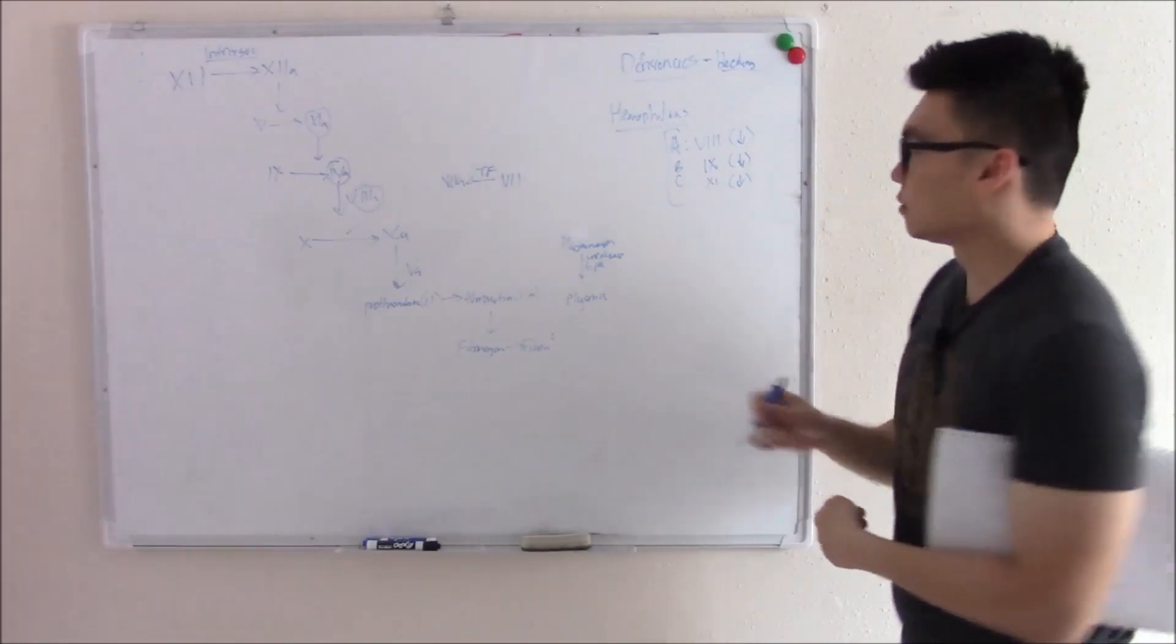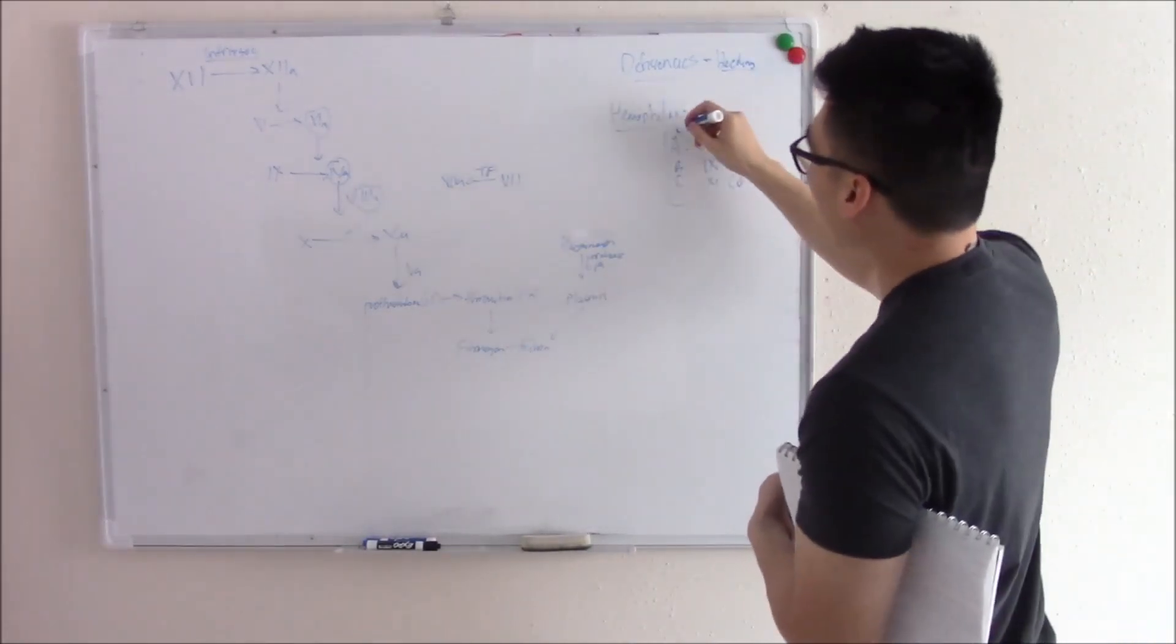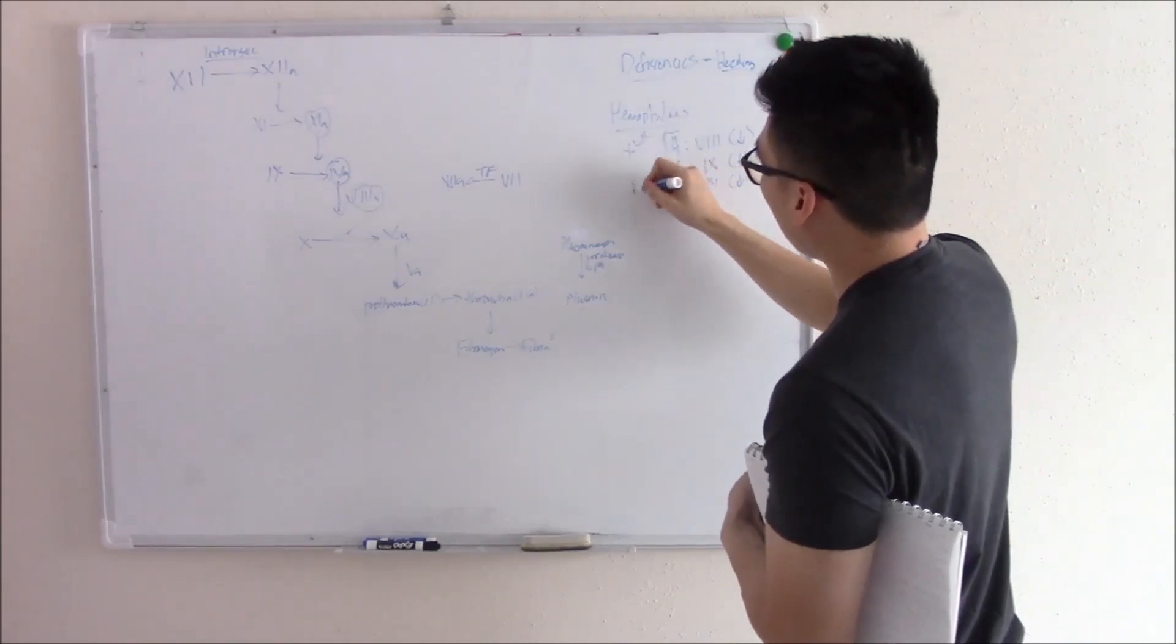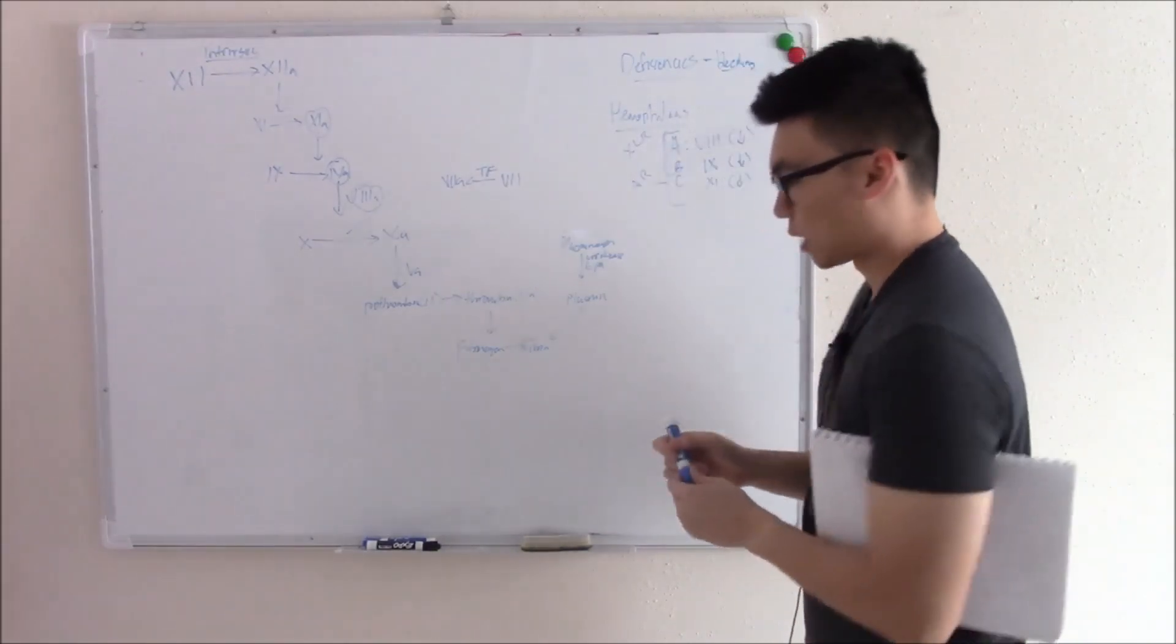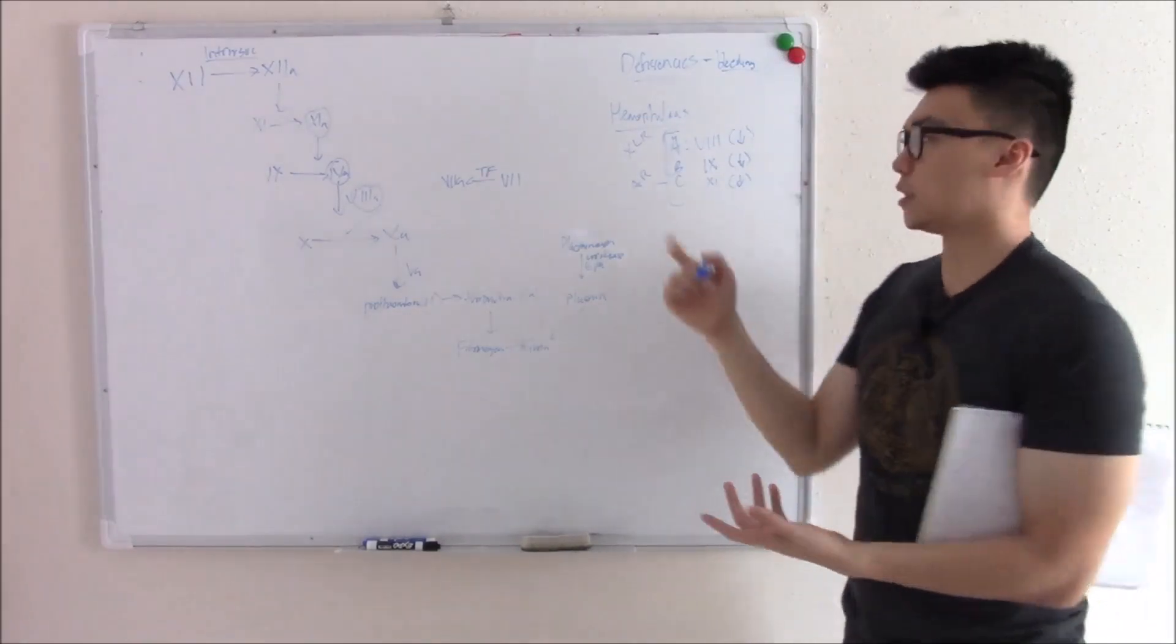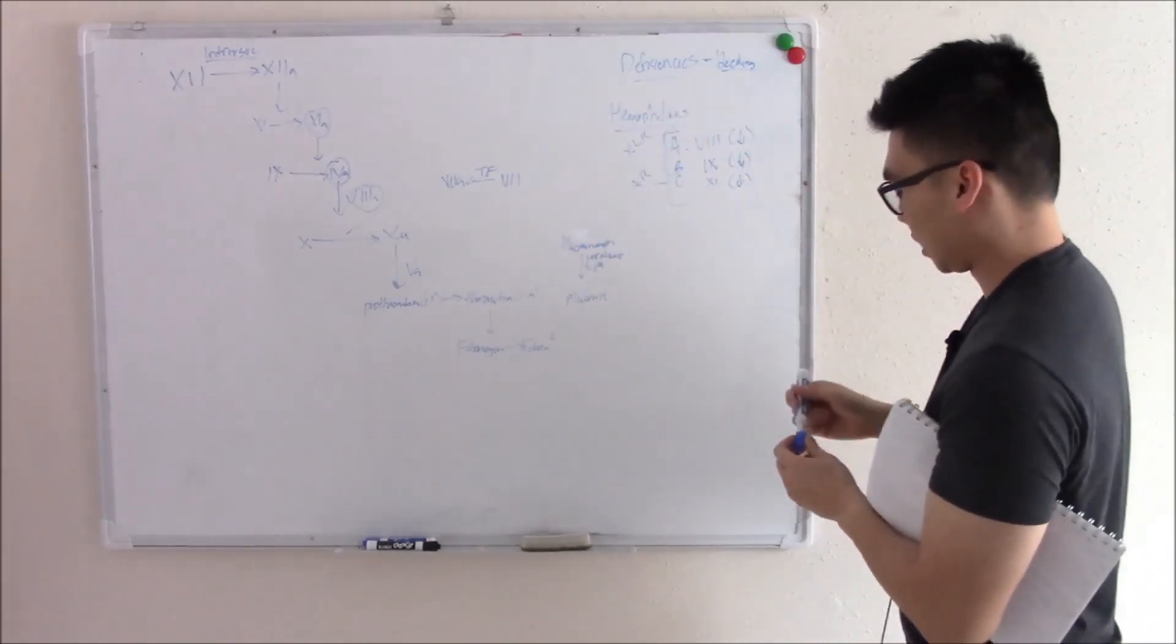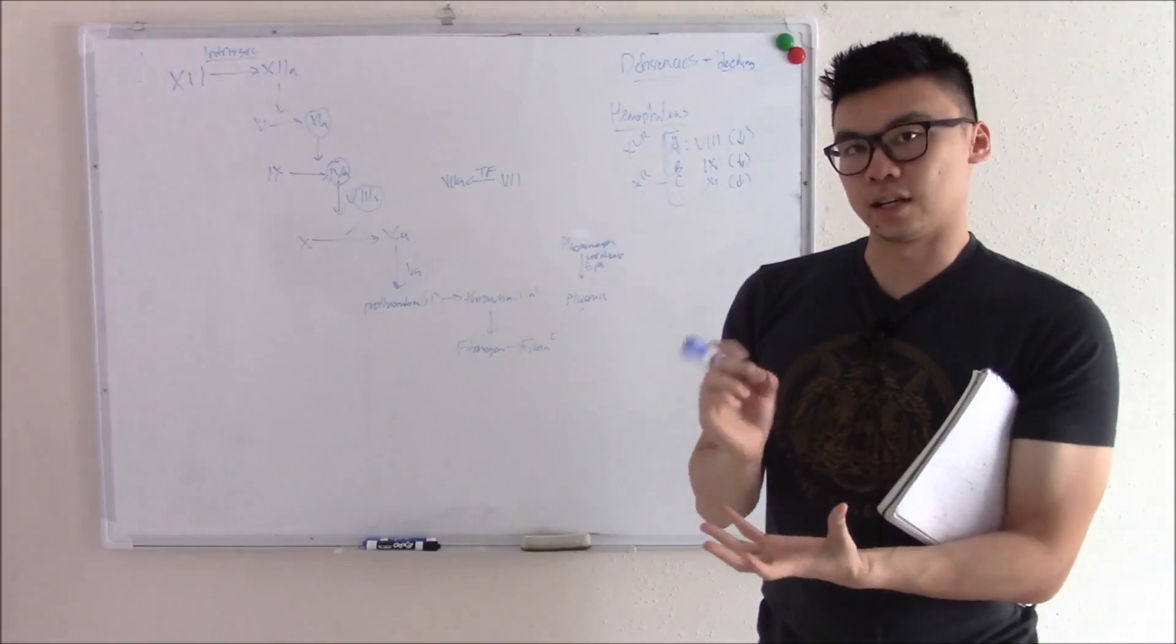Something important to note. Like I said, it's an inherited disorder. A and B are going to be X-linked recessive, while C is going to be autosomal recessive. I've seen a lot of questions that just ask what's the inheritance pattern of these, so know them.